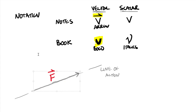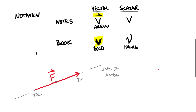Every vector has both a tip and a tail. The tip is the arrowhead, and the tail is like where the fletchings would be on an arrow. The sense of a vector is whether the vector arrow is going up to the right along the line of action or down to the left. If we flip this vector around, we take the negative of this vector, which physically flips it in the other direction.